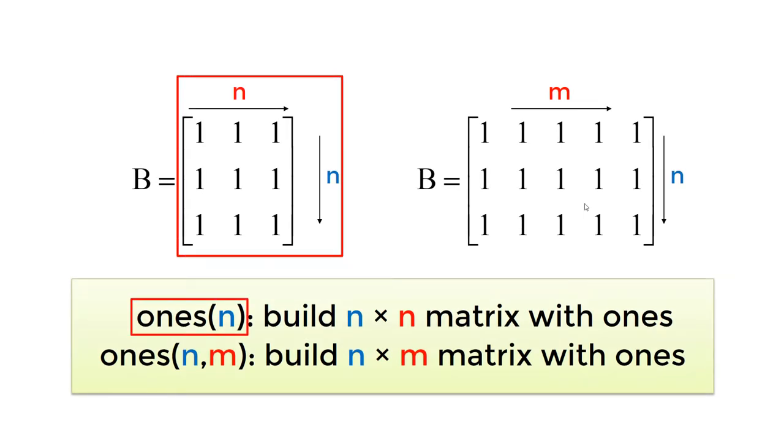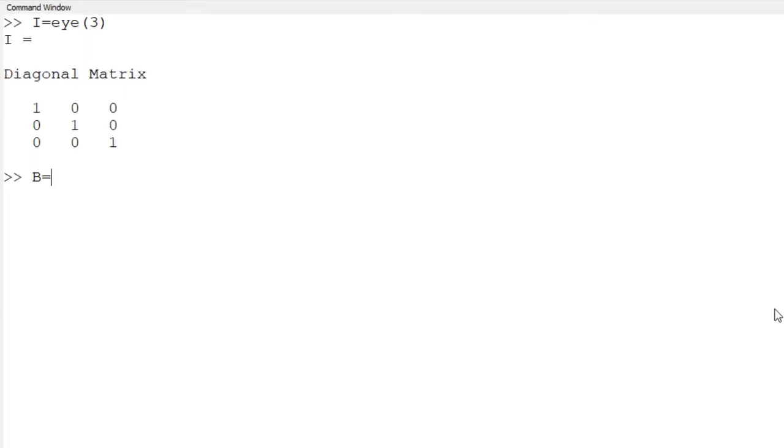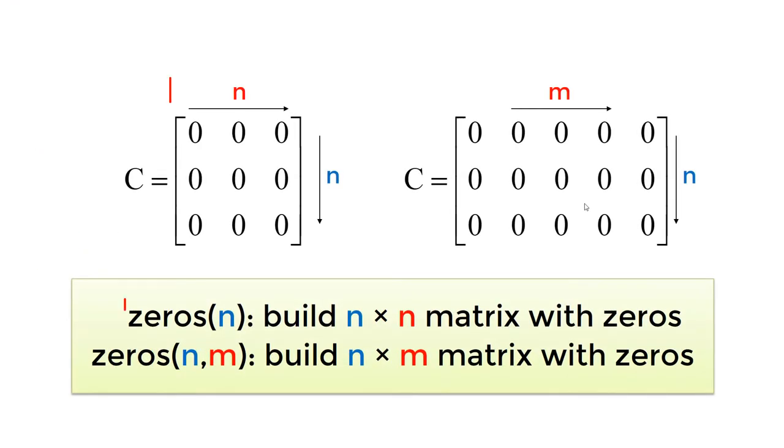If you want to create an n by n matrix with all elements of 1s, you can use ones n. If you have non-square matrix, you can use ones n, m. For example, B equals ones 3 creates a 3 by 3 matrix B with 1s. And B equals ones 3, 5 creates 3 by 5 matrix B with 1s. Similarly, you can create matrix C with all elements of 0s using zeros n or zeros n, m.